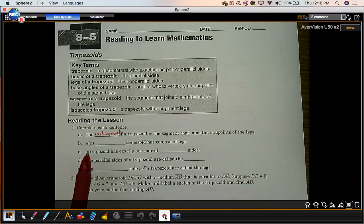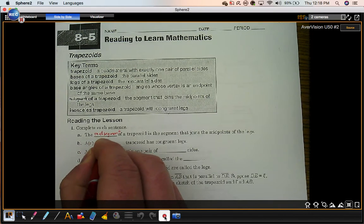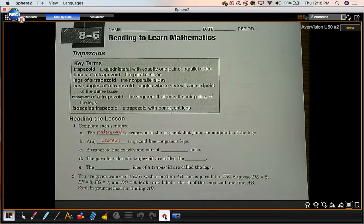Part B: A blank trapezoid has congruent legs. It's an isosceles trapezoid.